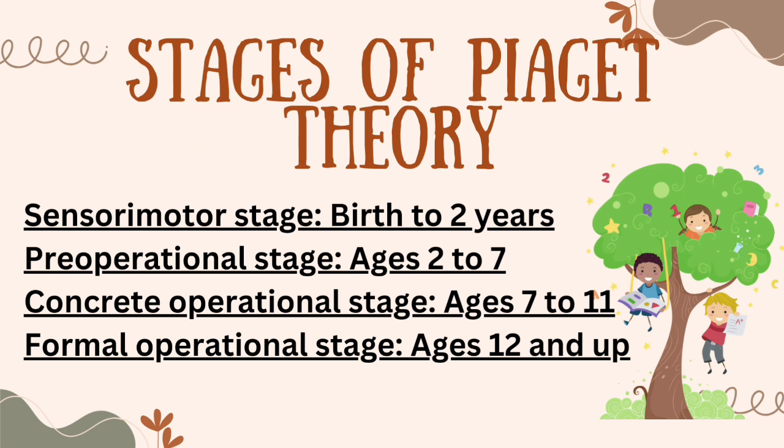There are four stages of Piaget's theory of cognitive development: the sensorimotor stage, the pre-operational stage, the concrete operational stage, and the formal operational stage.